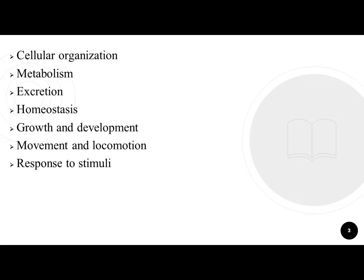نمبر آٹھ: Reproduction. جاندار اپنی طرح کے دوسرے جاندار پیدا کرتے ہیں — اسے reproduction کہتے ہیں۔ نمبر نو: Heredity. جاندار اپنی طرح کے ہی جاندار پیدا کرتے ہیں کیونکہ کچھ خصوصیات وہ اپنے بچوں کو منتقل کرتے ہیں۔ ان خصوصیات کے منتقل ہونے کی طریقے کو heredity کہتے ہیں۔